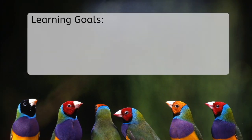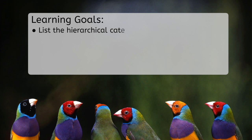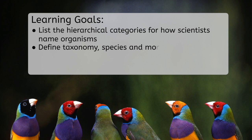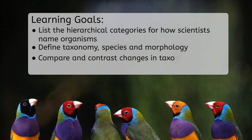But before we get started, let's look at our goals for this lesson. By the end, you'll be able to list the hierarchical categories for how scientists name organisms, define taxonomy, species, and morphology, and compare and contrast changes in taxonomy over the past 150 years.